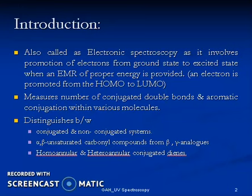In today's discussion we will introduce UV-visible spectroscopy, covering the wavelength region and Beer-Lambert's law. UV spectroscopy is also known as electronic spectroscopy because it involves electrons jumping from lower energy states to higher energy states by absorbing electromagnetic radiation.